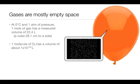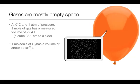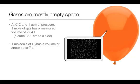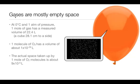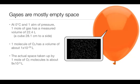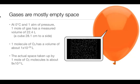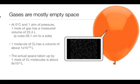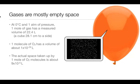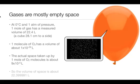We can say that gases are mostly empty space because although the volume is 22.4 liters, if we look at the volume of each individual oxygen molecule, we'll see that they only have a volume of about 10 to the negative 29th. So the actual space taken up by one mole of oxygen molecules really is only about 9 times 10 to the negative 6 liters. Well, that means that most of that volume, then, is going to be empty space.